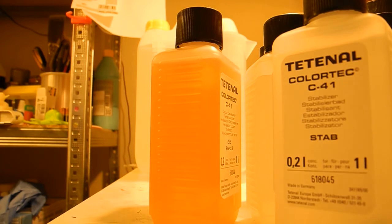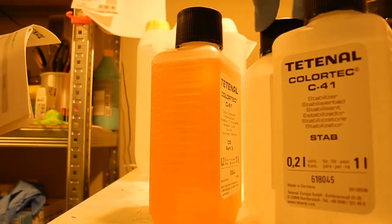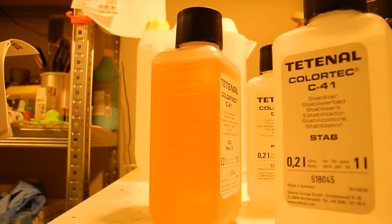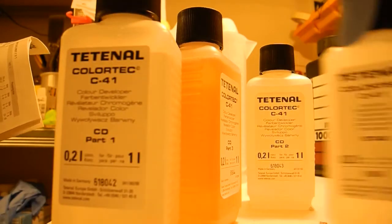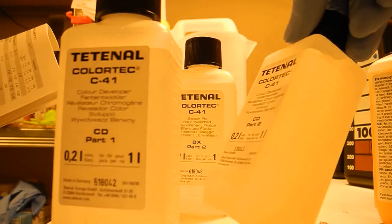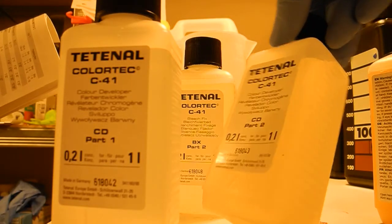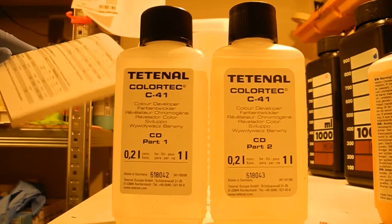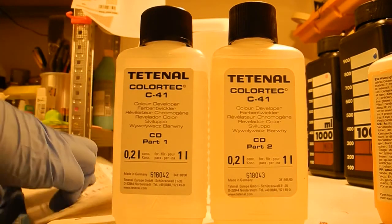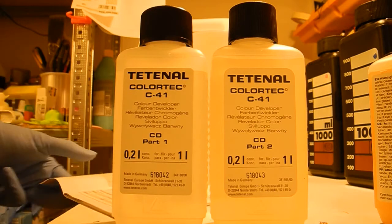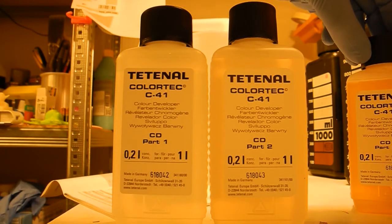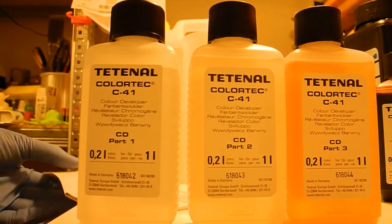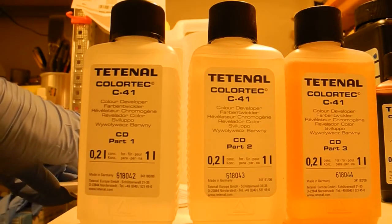Color Developer Part 1, you need 100ml of that. That's Part 2, that's 200ml of that. And there's a third part. Color Developer Part 3, here we go, all three of them. And to make one liter, you add 400ml of water.